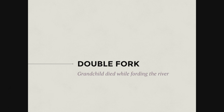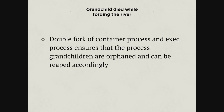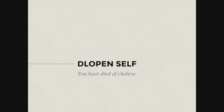So the second thing — this is more of an anecdote and it's kind of funny because I thought of this cool pun. A double fork. The death here is: a grandchild died while fording the river. We actually double fork the container process and exec process so that those processes' grandchildren are orphaned and then they can be reaped accordingly. So it's kind of timely and nice.